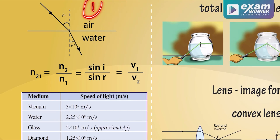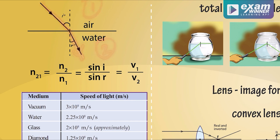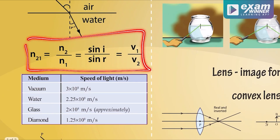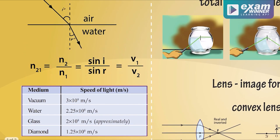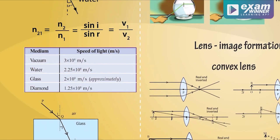First, the incident ray is in the first medium. Second, the refracted ray goes into the second medium. This relationship is correct: N2 by N1 is equal to sin I by sin R. This is also equal to V1 by V2, where V1 is the velocity in the first medium and V2 is the velocity in the second medium.